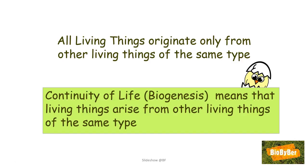What else do these living things have in common? Well, living things can only originate from other living things of the same type. This is continuity of life. The definition is: living things arise from other living things of the same type. In the past, they thought that living things came out of inanimate objects. When they saw frogs coming out of mud, they decided that mud changed into frogs. When they saw maggots hatching out of meat, they decided that meat turned into maggots. They did not realise that the frogs had hibernated for the winter or that flies had laid eggs in the meat.